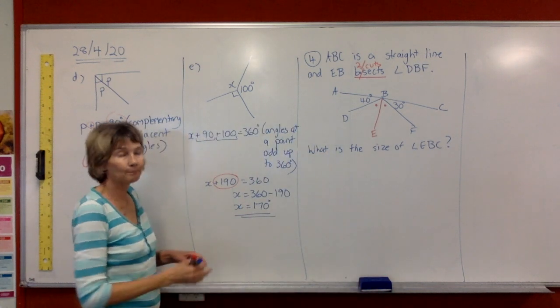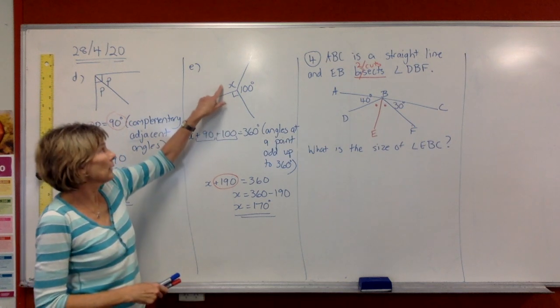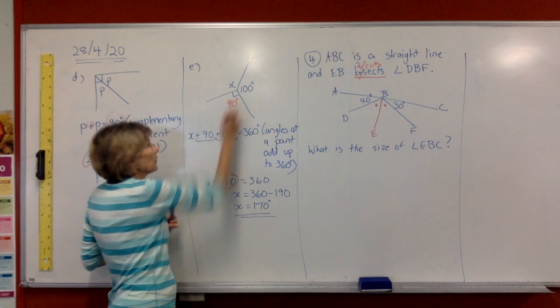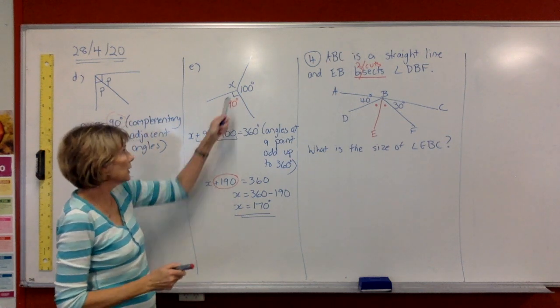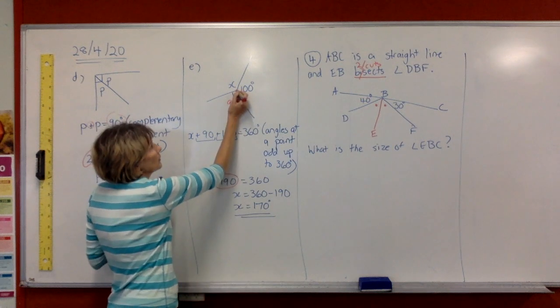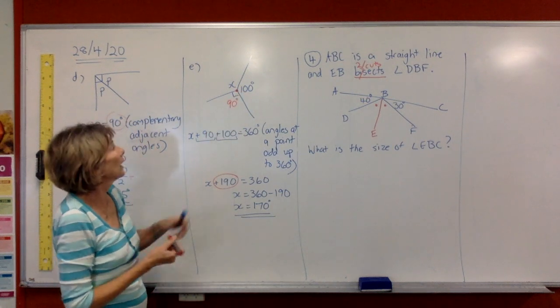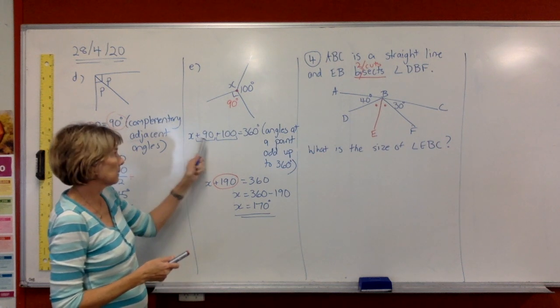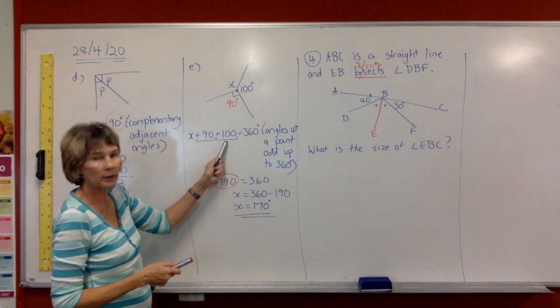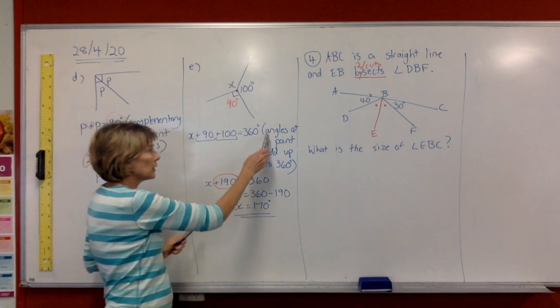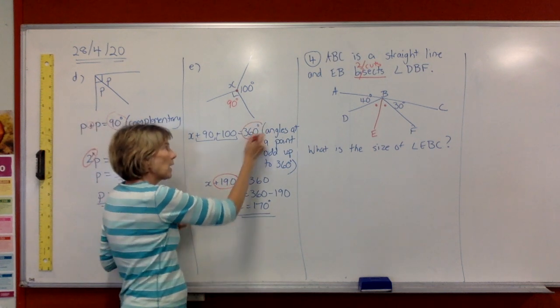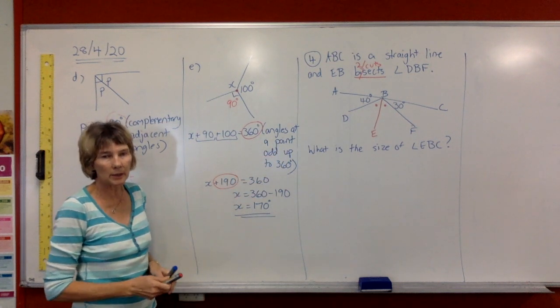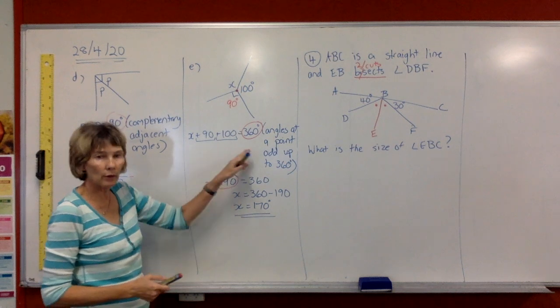Okay, the next one. If we have a look, we have an X. We have a 90 degrees with our right angle. We have 100 degrees. We know that they're all angles around a point or at a point and that all those angles have to add up to 360 degrees. So we're going to write X plus 90 plus 100 has to equal 360. Give you a reason because you've got to tell them why this came about. And the reason is angles at a point add up to 360 degrees. Then you're just solving an equation.